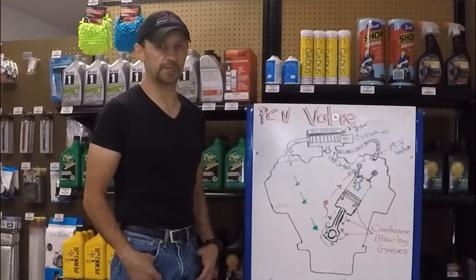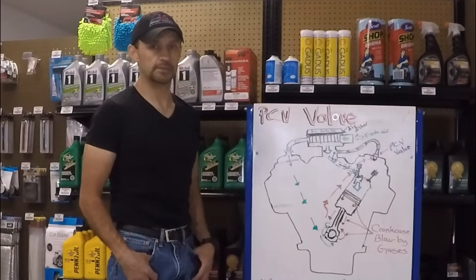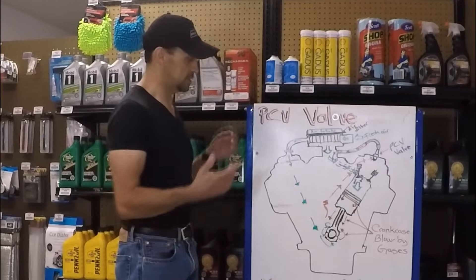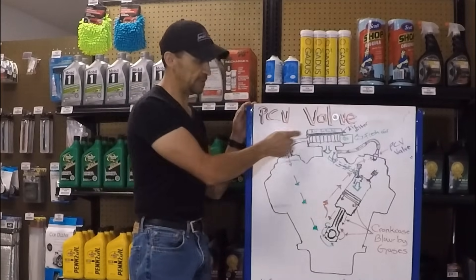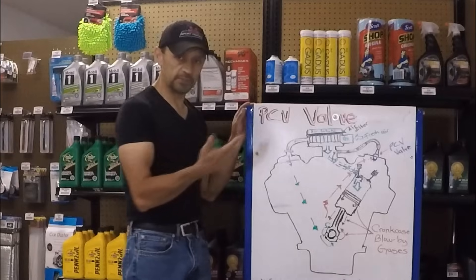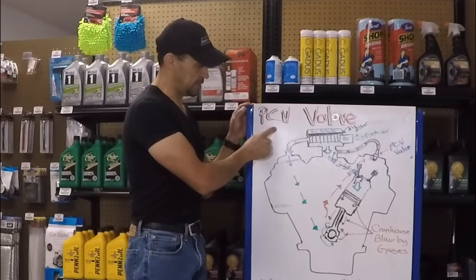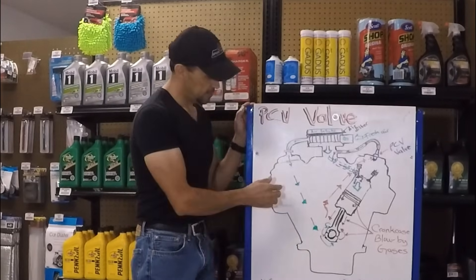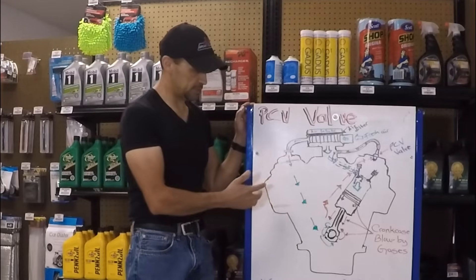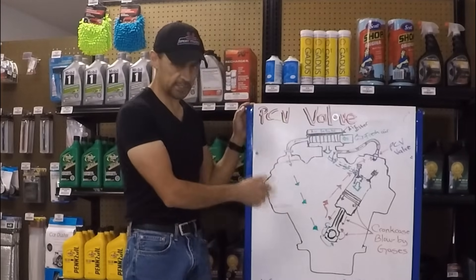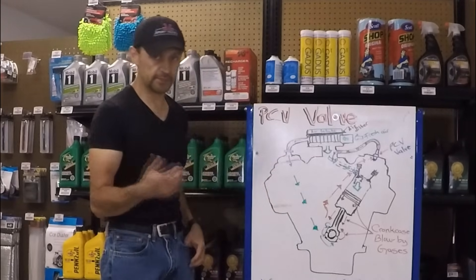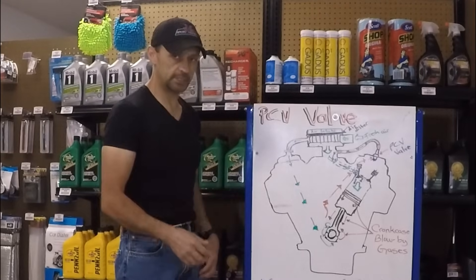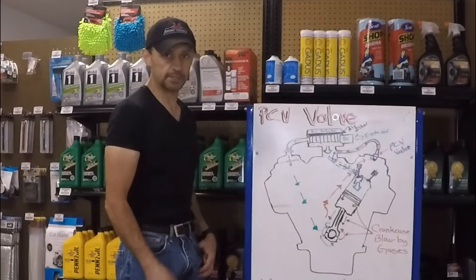Hello everyone, welcome back to HowStuff on my carworks channel. Today's video is about how the PCV system works, which the main part is going to be the PCV valve. So what does PCV mean? Positive crankcase ventilation. Now this is the crankcase. I drew the engine with the diagram that shows how the flow takes place. I'm going to bring the camera up close so you can see it and I'll go over this. So let's get started.